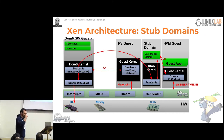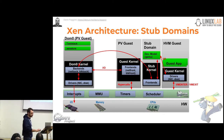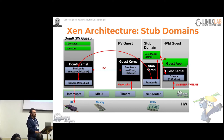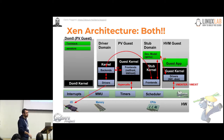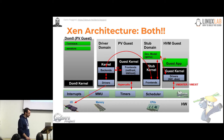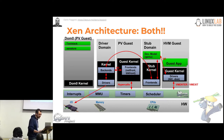What about HVM guests and QEMU? We can do something very similar: take QEMU, the device model, out of the control domain and put it in another virtual machine, which we call a stub domain. This takes IO out of the control domain for HVM guests as well. And we can combine the two things — basically taking away IO from the control domain for both PV and HVM guests.